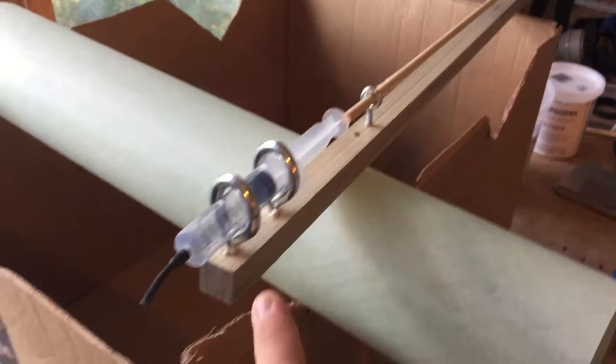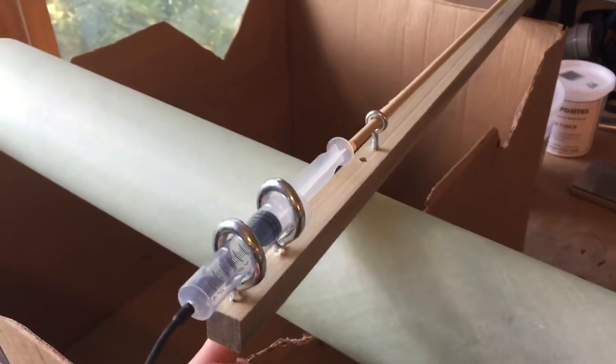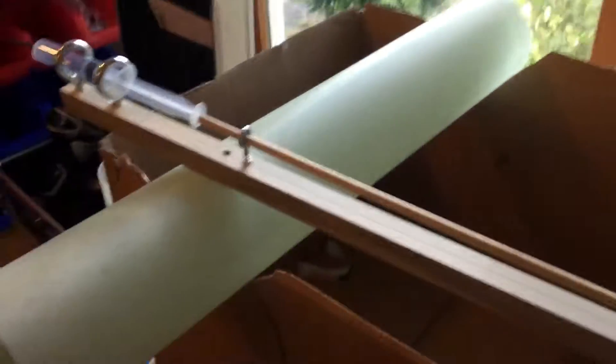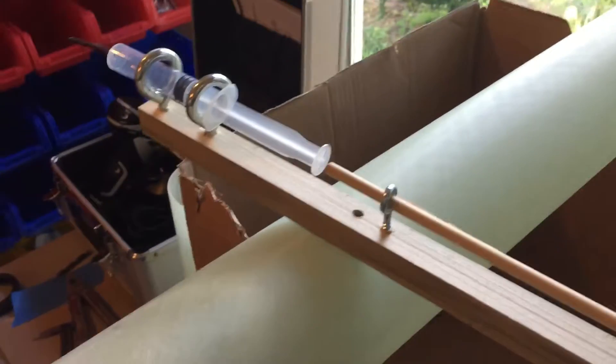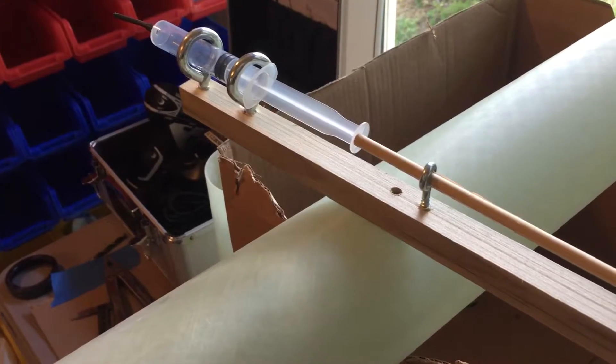So you've just got a three-quarter inch bar with eye hooks to hold the syringe, and then two eye hooks to hold the rod. The operation is simple. You put the syringe down in there and then you can just push on the rod to push the syringe in.